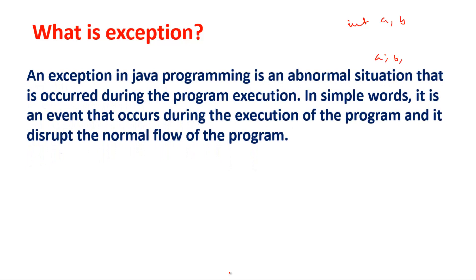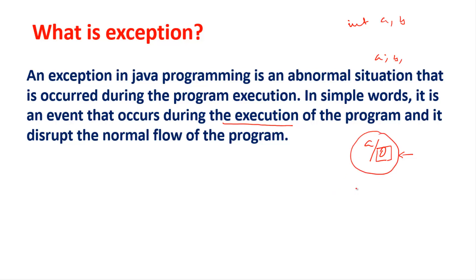An exception in Java programming is an abnormal situation that occurs during program execution. In simple words, it is an event that occurs during the execution of programs and disrupts the normal flow of the program. For example, while calculating important data, something divided by zero may occur unexpectedly. The program abruptly terminates, so this kind of thing has to be trapped and checked — that is what an exception is.